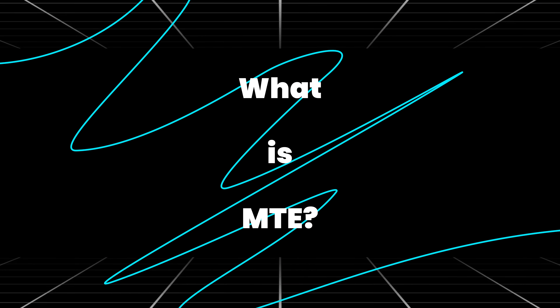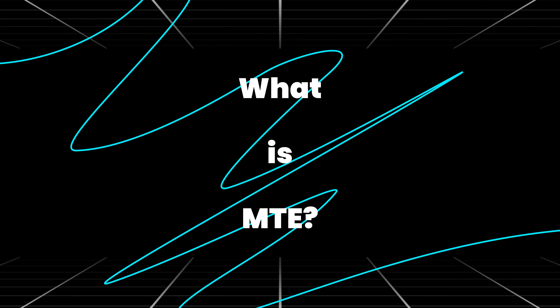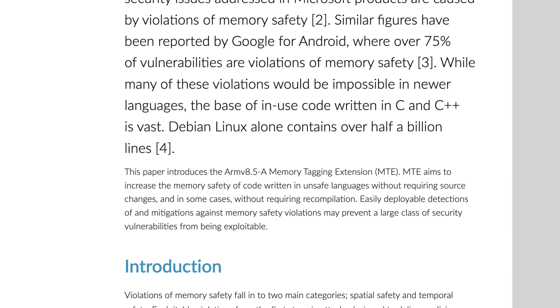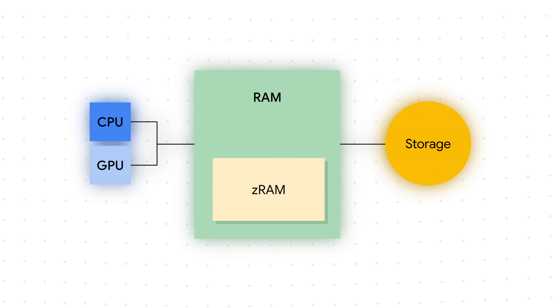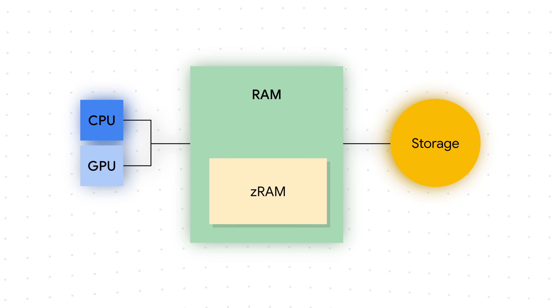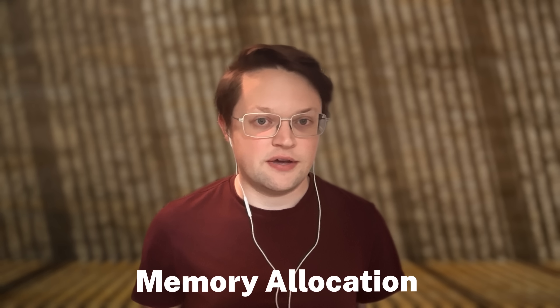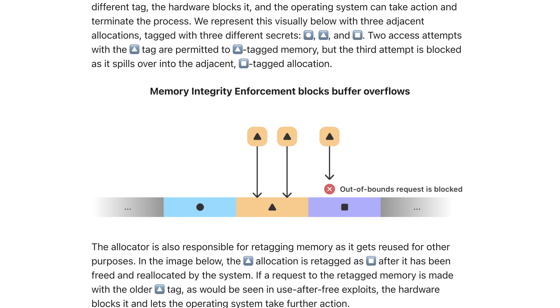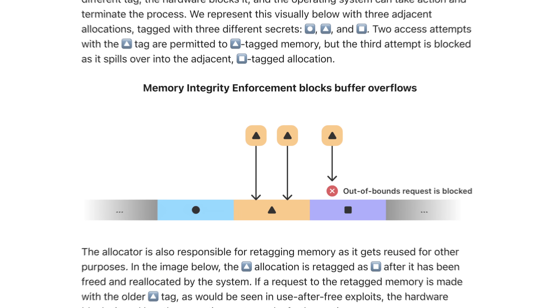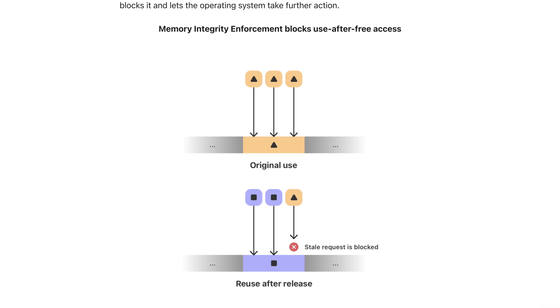So you're probably wondering, what is MTE? MTE is a CPU hardware feature that was originally built by ARM as a debugging tool for software developers. Apps need to store data in your phone or computer's memory, or RAM, and they reserve this space through a process called memory allocation. Unfortunately, the allocations that these apps get are often not validated, and apps can inadvertently or maliciously access memory outside of what they've been allocated through a variety of methods. What MTE does is essentially a system which informs the developer and the operating system when this happens.